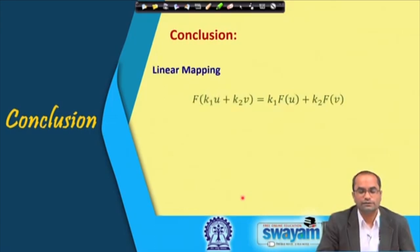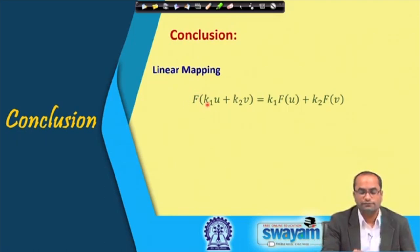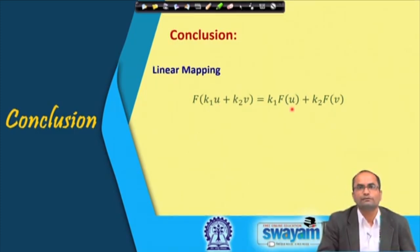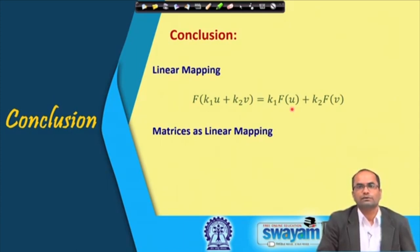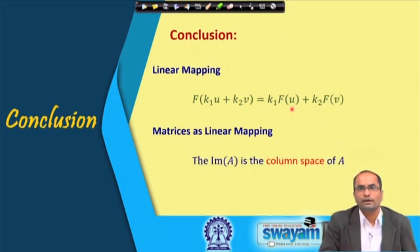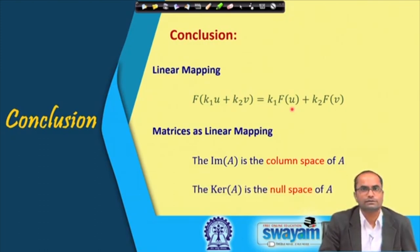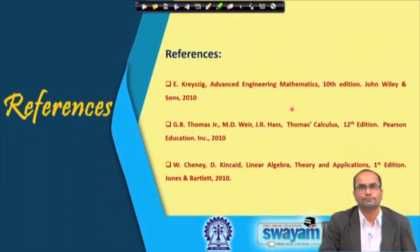In conclusion, we discussed linear maps: to verify a linear map, apply F on k1·u + k2·v and check if it equals k1·F(u) + k2·F(v). Matrices of order m×n are linear maps from R^n to R^m. The image of A is the column space of A, and the kernel of the matrix mapping A is the null space of A. Thank you for your attention.